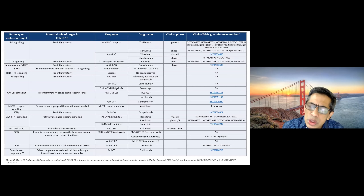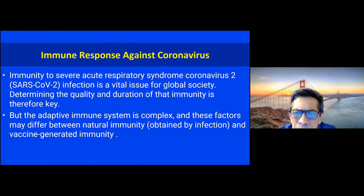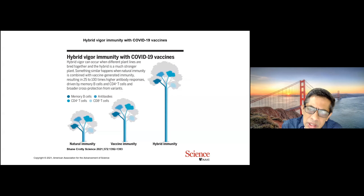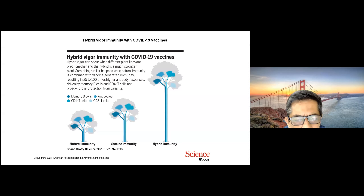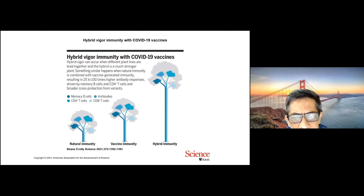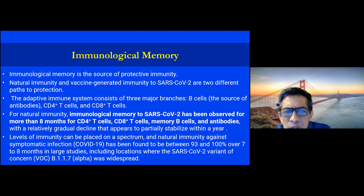Immunity and immune response against SARS-CoV-2 and the adaptive system response are complex. These factors may differ between natural immunity obtained by infection and vaccine-generated immunity. There is a new concept called hybrid immunity — people who have mounted a response due to natural infection have memory B cells, CD4 T cells, CD8 T cells, and antibodies. Vaccine immunity is even better. Similar to hybrid vigor in plant crossbreeding, when natural immunity is combined with vaccine-generated immunity, there is a 25 to 100 times higher antibody response from memory B cells and CD4 T cells, with broader variant coverage.